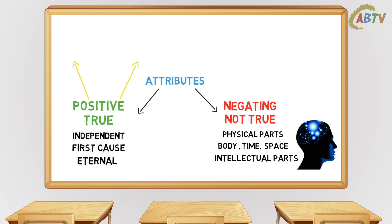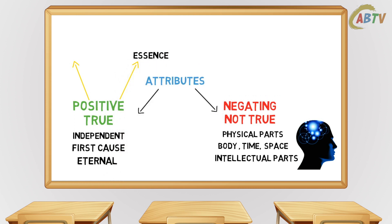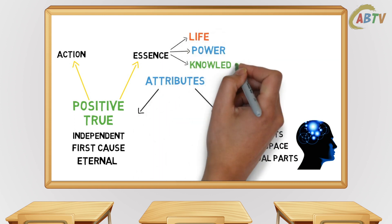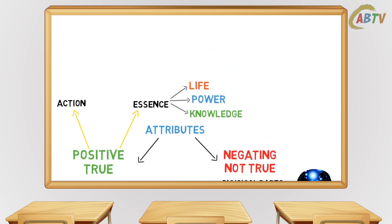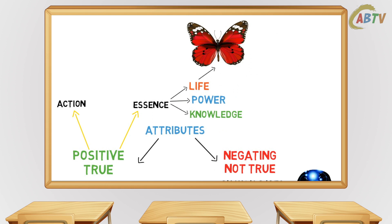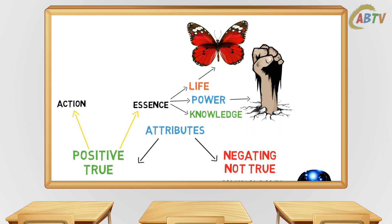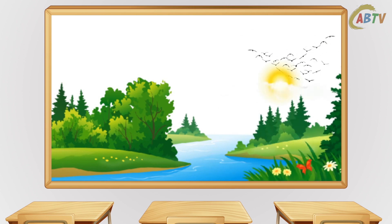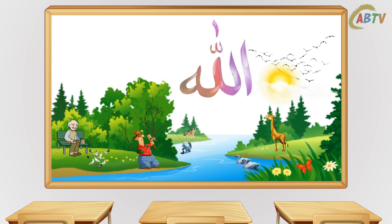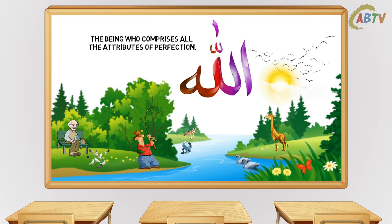The books of philosophy and theology describe the attributes of this necessary being using two particular headings. First is the attributes of essence, and the second is the attributes of action. The most important attributes of essence are life, power and knowledge. The simple proof is that when these attributes are used for any creation, they refer to their perfections. If a necessary existent does not have life, it cannot give life. If it does not have power, it cannot give power. But as we see in creation there is life, power and knowledge, so it becomes necessary that this necessary existent must have these positive attributes in a superior and perfect form that never diminishes. This necessary being is distinguished from all of its creation and we name him Allah, which means the being who comprises all the attributes of perfection.